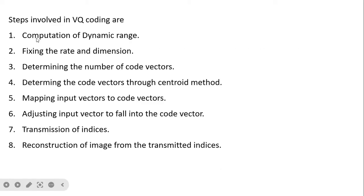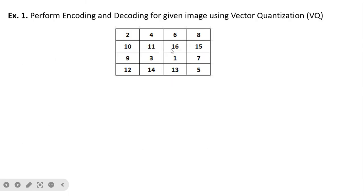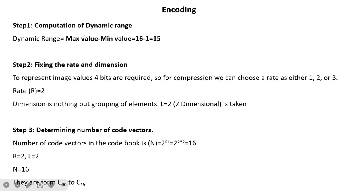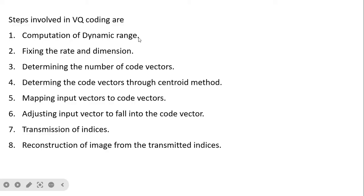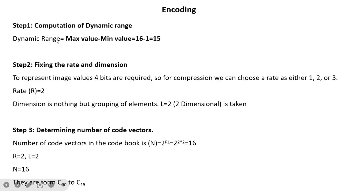There are eight steps involved in vector quantization coding. We will follow all these steps sequentially when solving the problem. The example involves performing encoding and decoding for a given 4×4 image using vector quantization. The first step is computation of the dynamic range, which is the maximum value minus the minimum value. The maximum value in the image is 16 and the minimum is 1, so the dynamic range is 15.